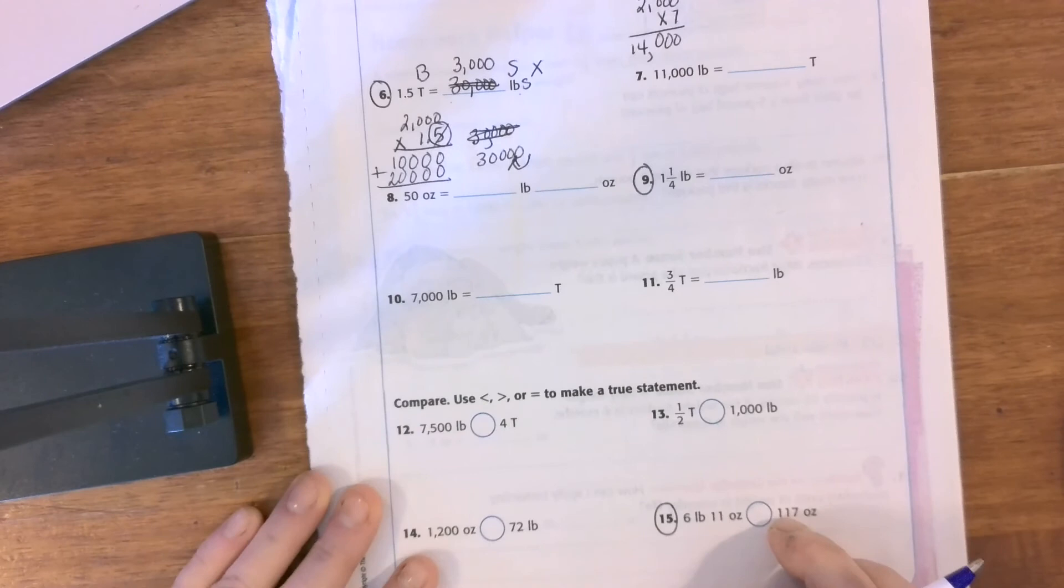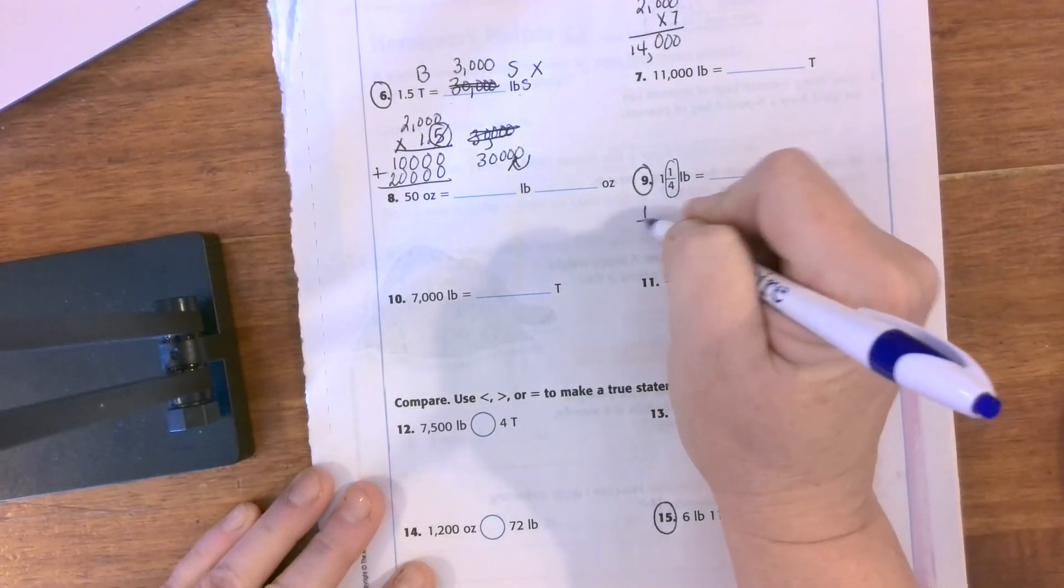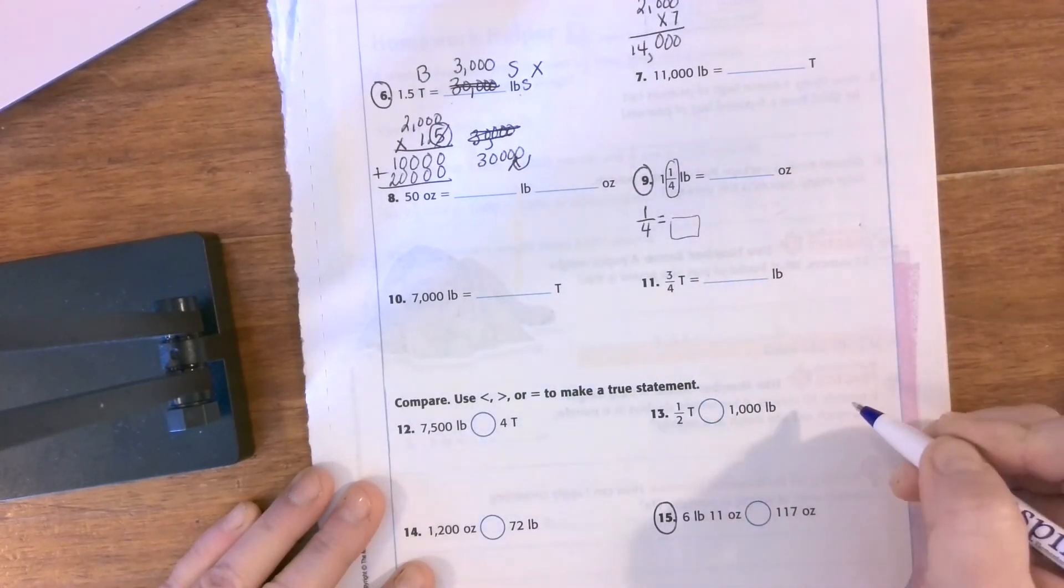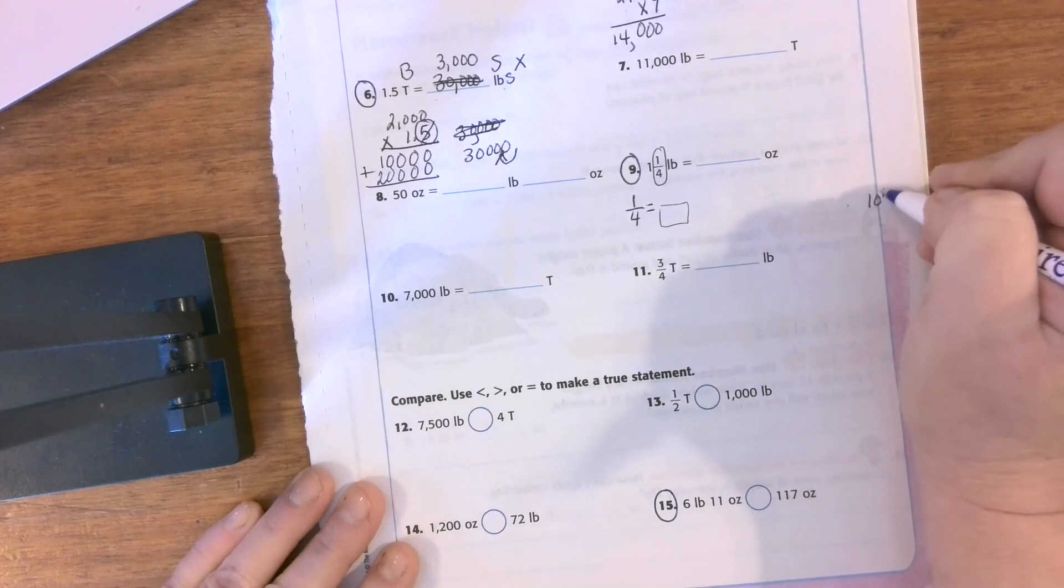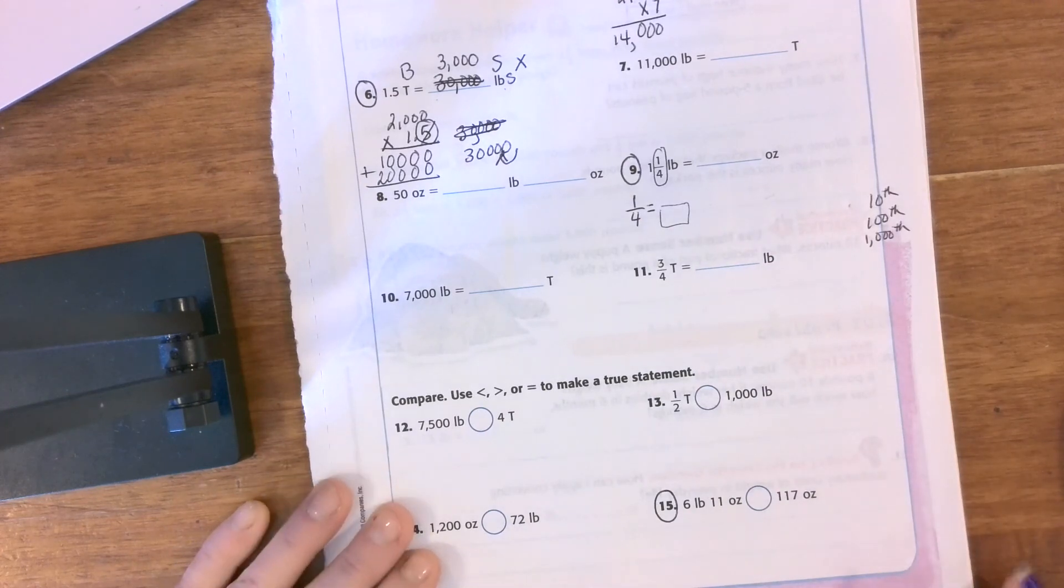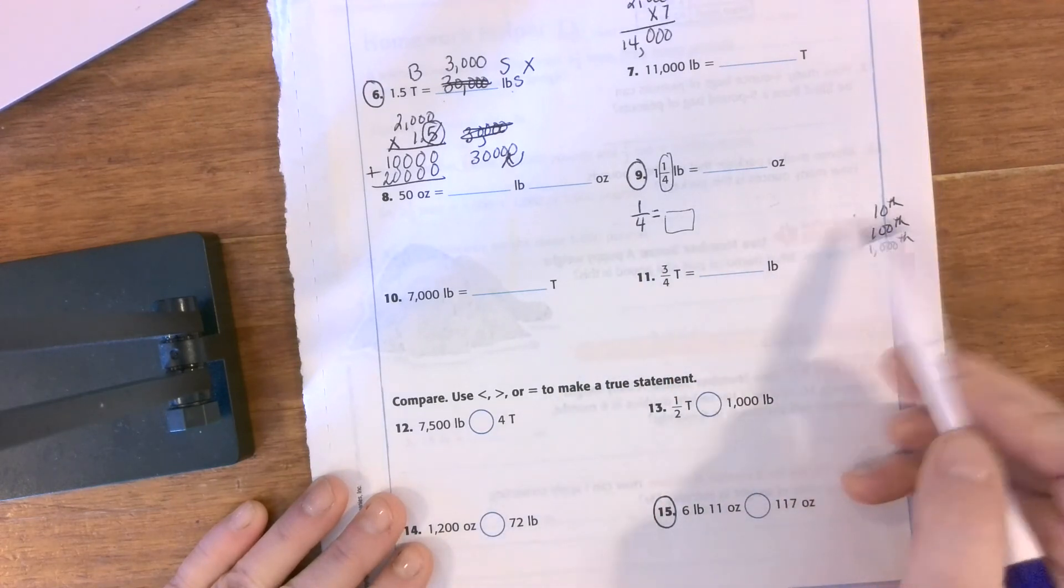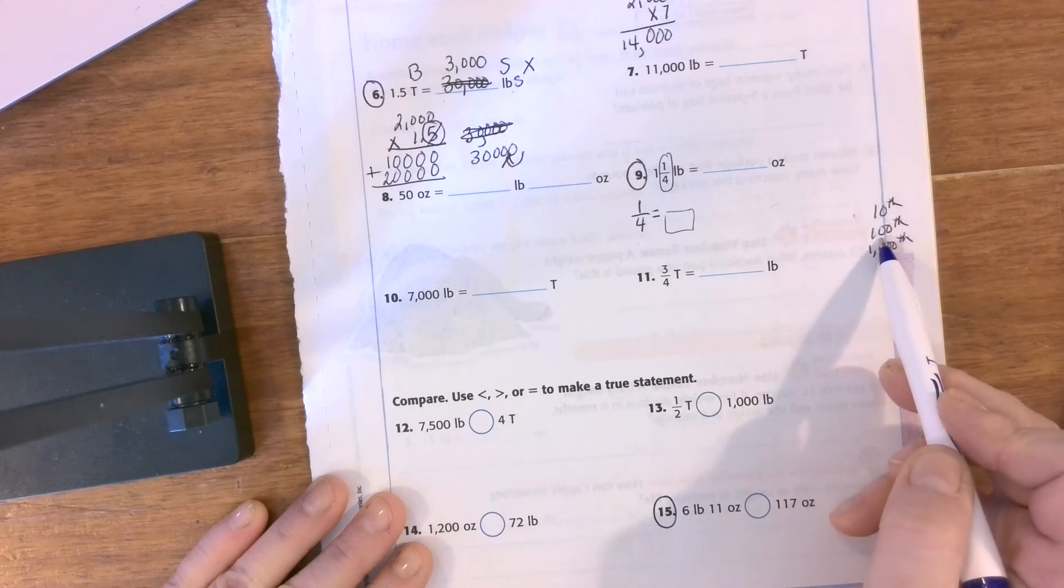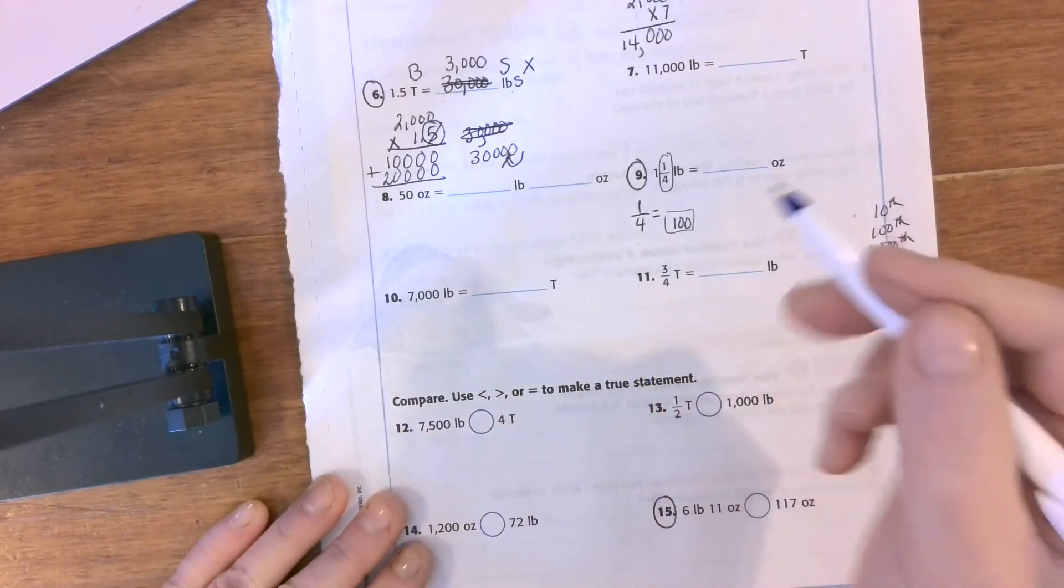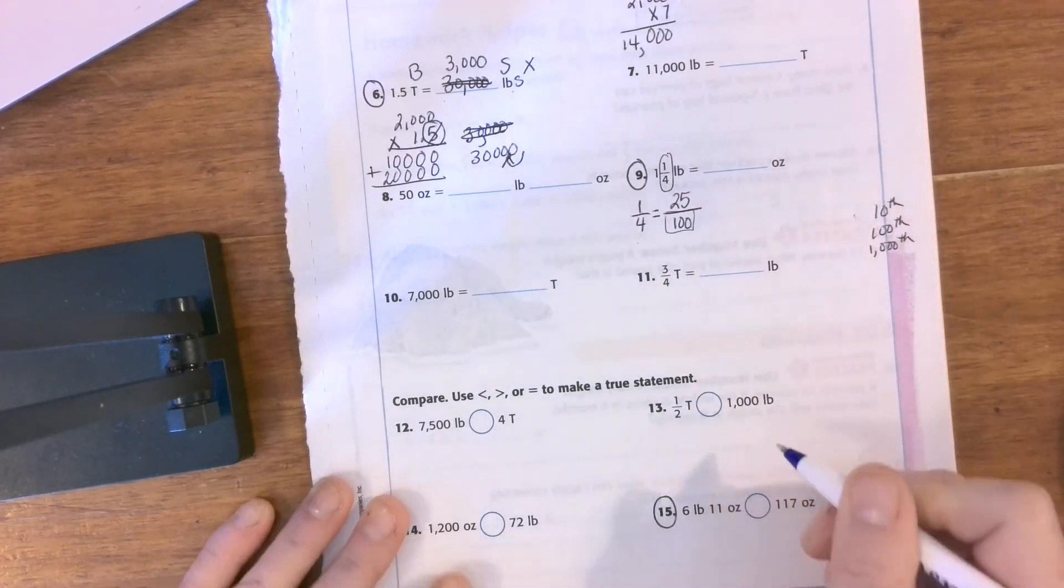One and one-fourth pounds to ounces. Before I start, I need to convert this to a decimal. Four times what? So I have what? Denominators can give me a decimal: tenths, hundredths, thousandths. Think about all your factors that you know. Four times what gives me a hundred? Twenty-five. If you do it to the bottom, you got to do it to the top. One times twenty-five is twenty-five. So how do I write twenty-five hundredths as a decimal? 0.25.